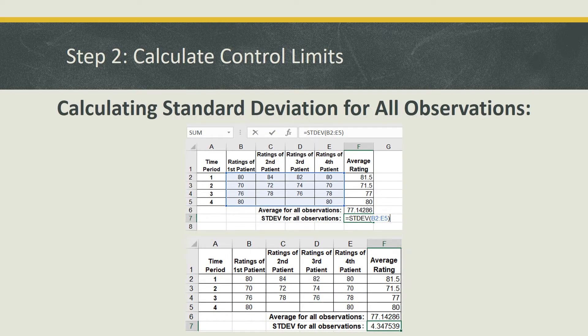Now we're going to calculate the standard deviation for all observations. And we can do this the same way that we did the previous step by creating a new row for the standard deviation. And using the formula equals STDEV, which is specific to standard deviation, and then selecting the ratings of patient one through four, which is highlighted in blue, to obtain a value of 4.35.